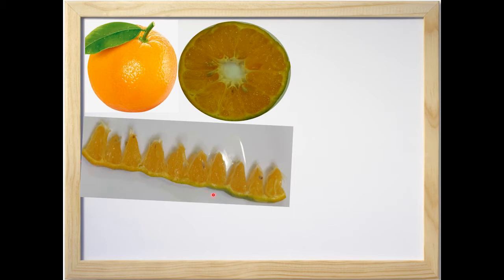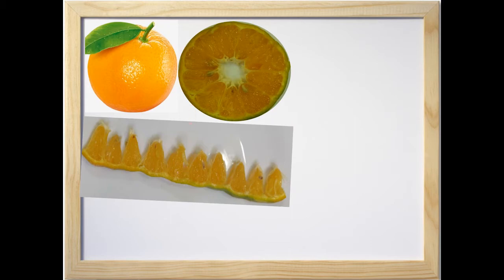The length of this wedge will give you the radius of this circular slice. The length of the wedge equals the radius. And the length of this rind will give you the circumference of this circular slice. Is it clear, children?